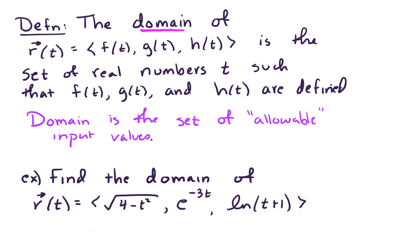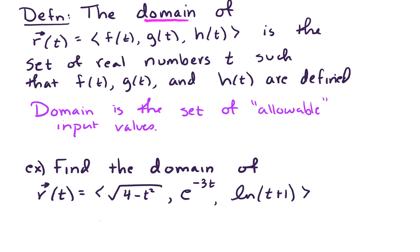When I say allowable, I mean f of t has to be defined and g of t has to be defined and h of t has to be defined. We can't have things like division by zero or the square root of a negative number, things like that. So let's take a look at an example.